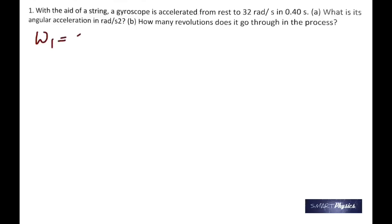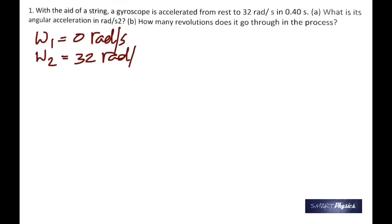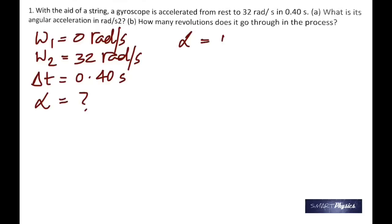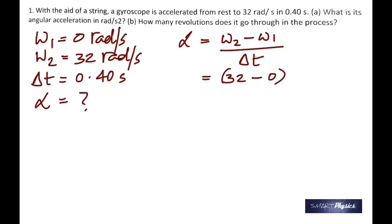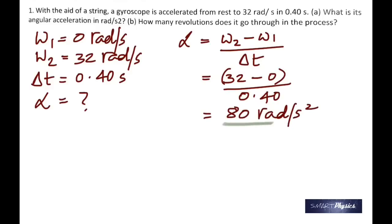The initial angular velocity is 0, the final is 32 rad/s, and the time is given. So alpha = (32 − 0) / t, which gives 80 rad/s².